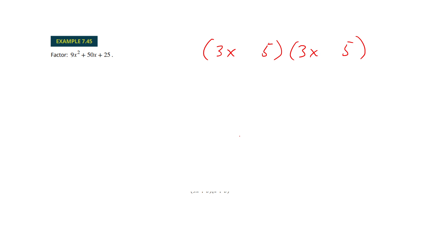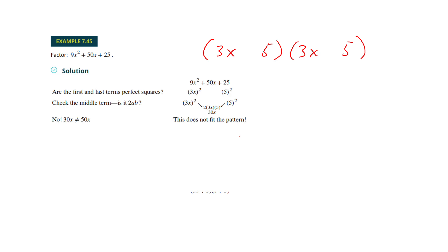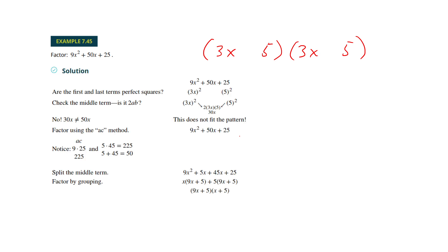So what we're going to have to do is factor this by the AC method. They find the two numbers using 9 times 25. This would be a hard one to find — it turns out to be 5 and 45. My point is that even though I had the square roots in the front and the back, we didn't make the middle properly, so we had to use the AC method instead.